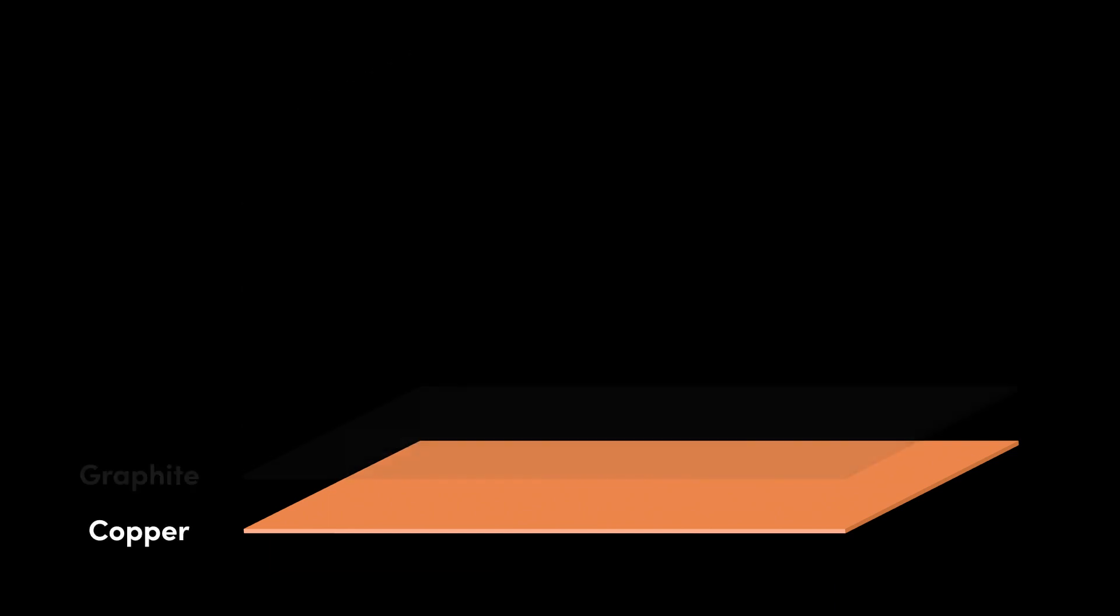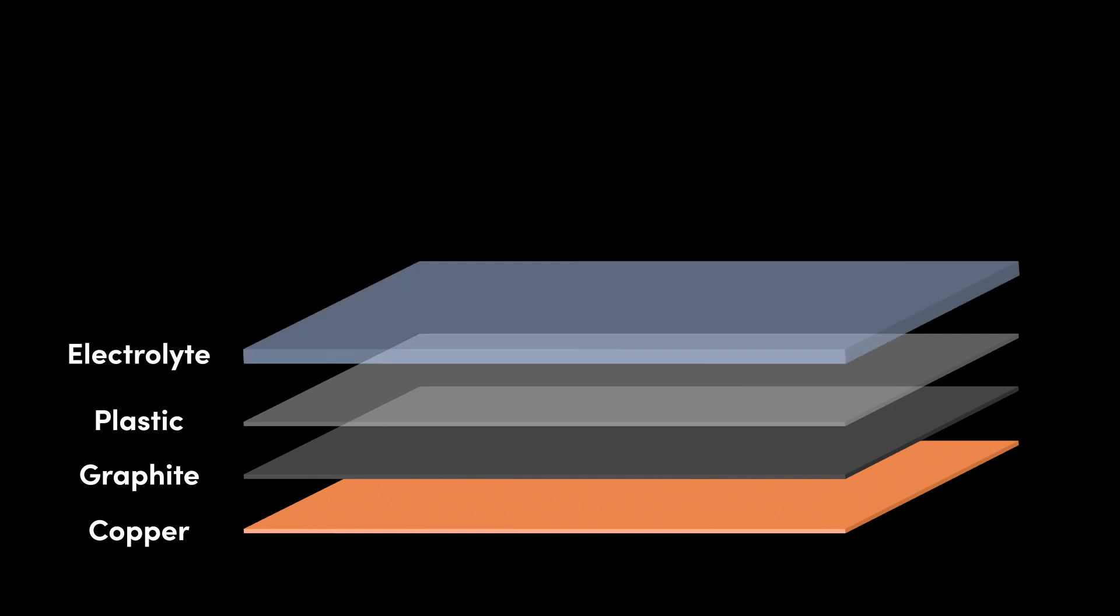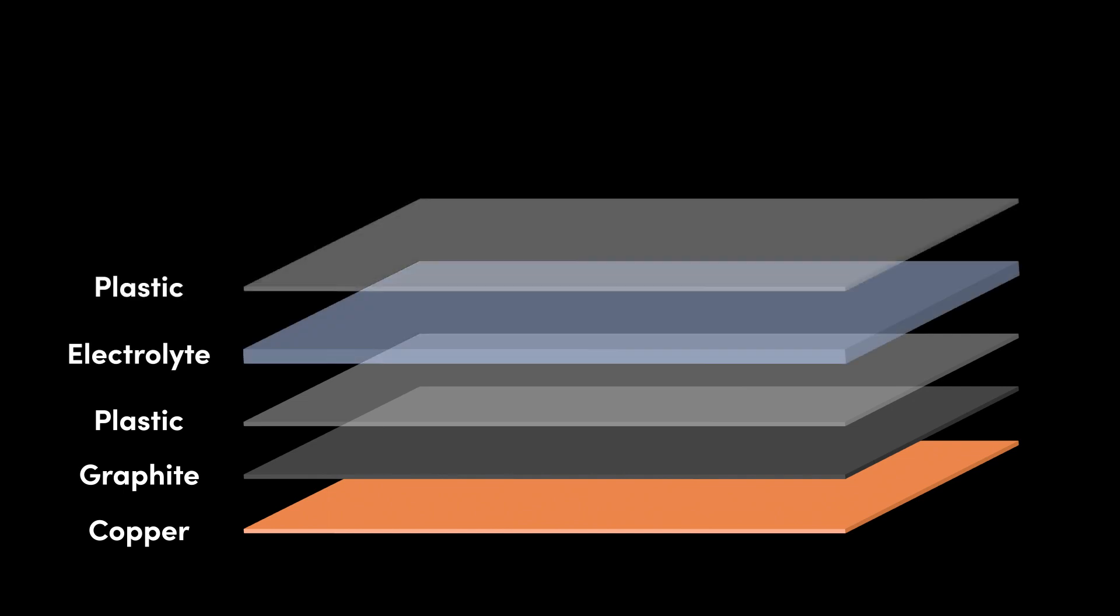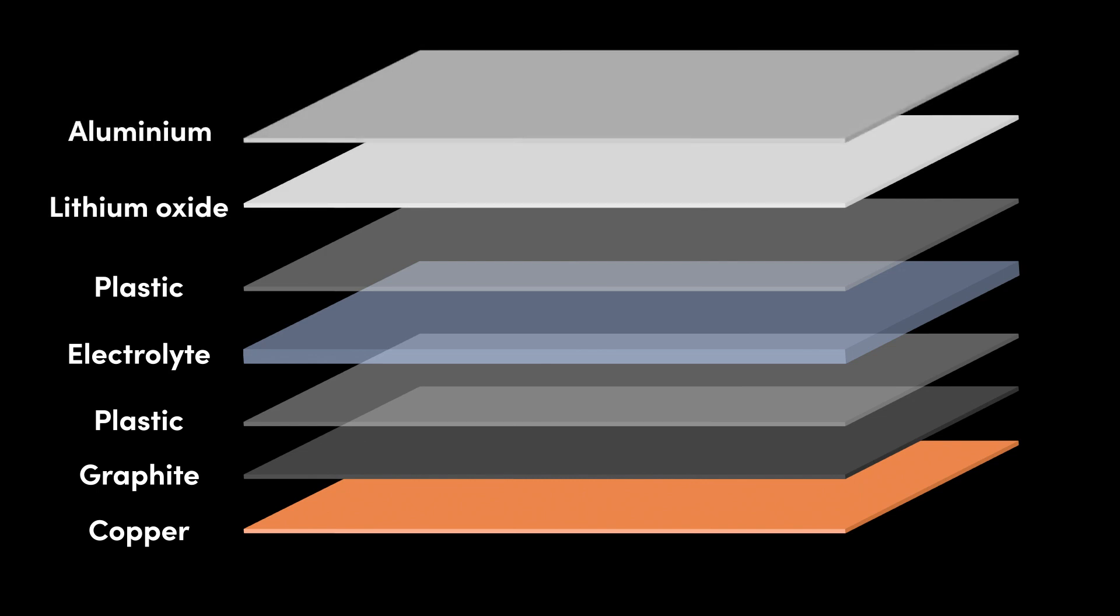We have a layer of copper, graphite, porous plastic, electrolyte, another layer of porous plastic, and then a layer of lithium oxide compound and aluminum. The layers of different materials create what is called an electrochemical cell.